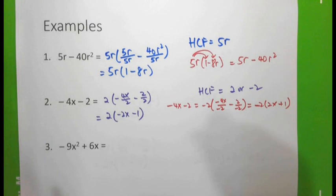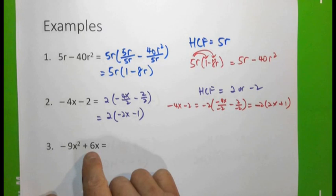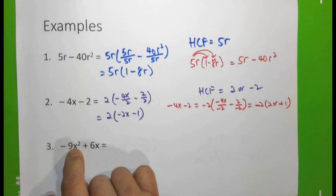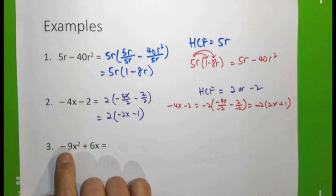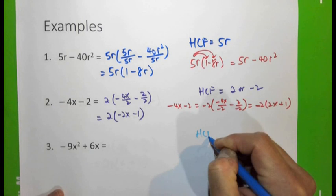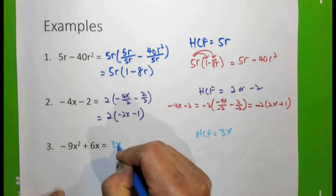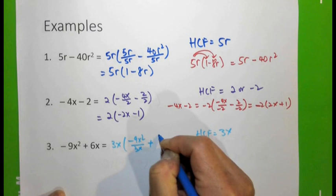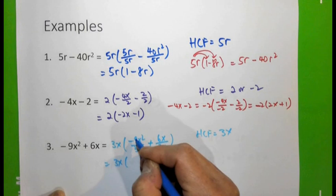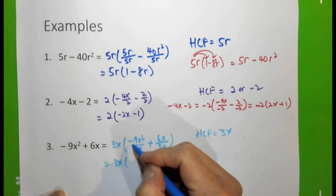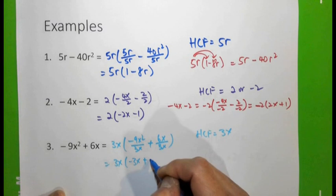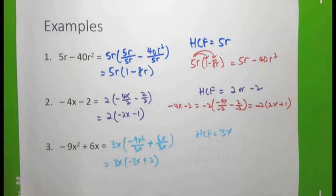Let's try number 3: -9x² + 6x. Both terms have x as a factor. Also, 9 and 6 can both be divided by 3, so the highest common factor is 3x. Taking 3x out: -9x² divided by 3x plus 6x divided by 3x. That gives 3x into (-3x + 2). With all these examples, I hope I've shown you how to factorize algebraic expressions.